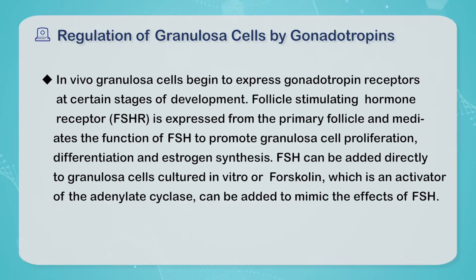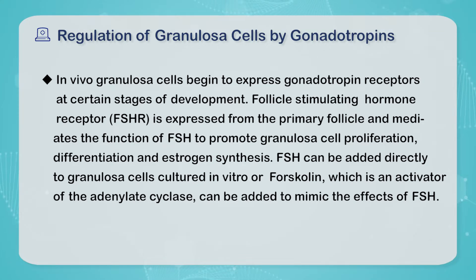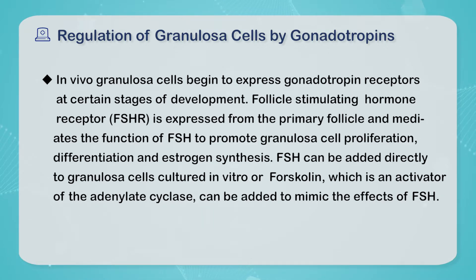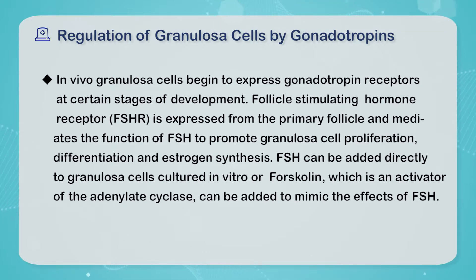In vitro culture of granule cells increases our understanding of gonadotropin regulation studies. In vivo, granule cells begin to express gonadotropin receptors at certain stages of development. Follicle-stimulating hormone receptor FSHR is expressed from the primary follicle and mediates the function of FSH to promote granule cell proliferation and estrogen synthesis. FSH can be added directly to granule cells cultured in vitro, or forskolin, which is an activator of adenylate cyclase, can be added to mimic the effects of FSH.